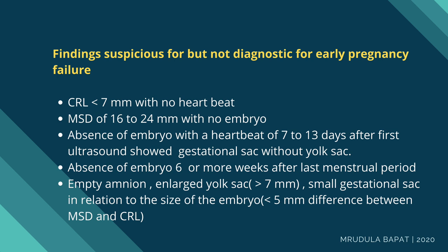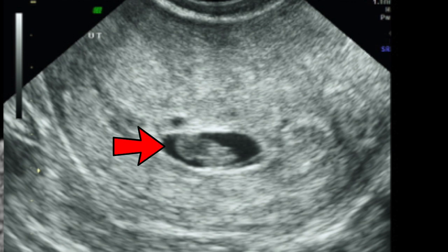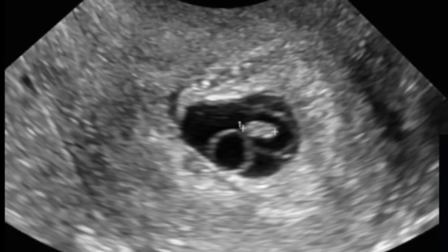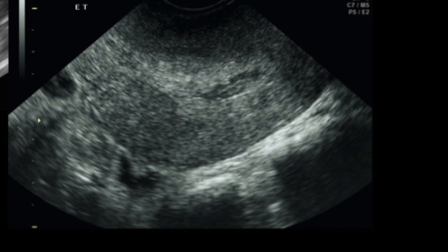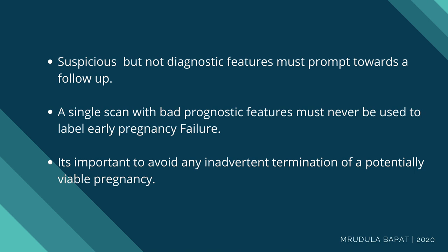This case shows very little fluid around the embryo with a very small sac — this should prompt a follow-up and not be directly labeled as non-viable. We had a recent case wherein the embryonic length was only around 4 to 5 mm with a large yolk sac and no cardiac activity seen. We know these features carry bad prognostic significance, but it's always helpful to follow these patients up. On follow-up, this patient was already bleeding and no gestational sac was seen inside the uterine cavity. It's important to remember that suspicious but not diagnostic features must prompt follow-up, and a single scan with bad prognostic features must never be used to label early pregnancy failure.